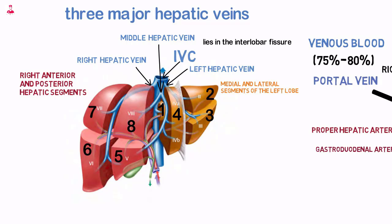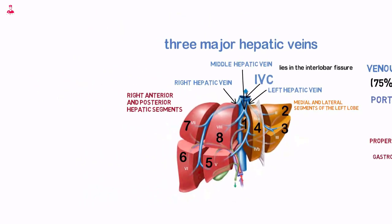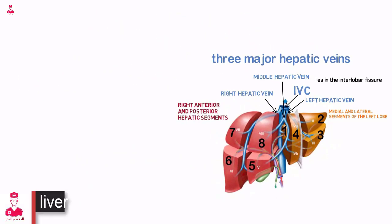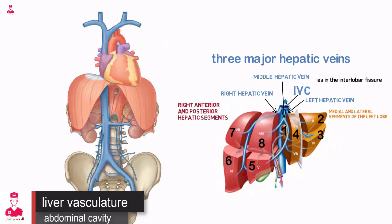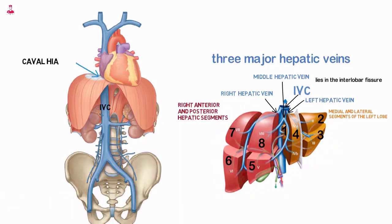Segment 1 drains directly into the IVC through smaller hepatic veins. Frequently, the middle and left hepatic veins converge to form a common trunk before emptying into the IVC just below the diaphragm. The IVC lies in a groove along the posterior wall of the liver and ascends into the thoracic cavity through the caval hiatus of the diaphragm and enters the right atrium of the heart.